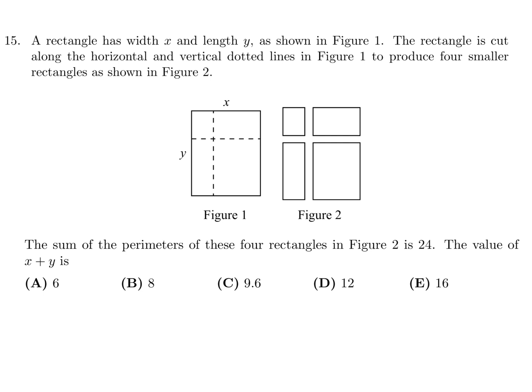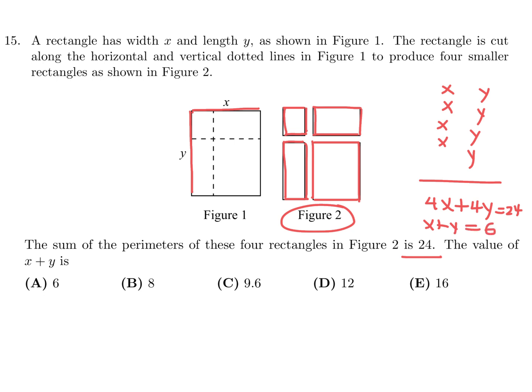A rectangle has width X and length Y as shown in figure 1. The rectangle is cut along the horizontal and vertical dotted lines in figure 1 to produce four smaller rectangles as shown in figure 2. The sum of the perimeters of these four rectangles in figure 2 is 24. The value of X plus Y is. So from there to there is X, and that's the equivalent of from there to there. So that contributes 1X. And that's also the same as that. So that's also an X. From top to bottom is Y. So that is from there to there. That's a Y. So in figure 2, the total is really 4X plus 4Y. And they're saying that is equal to 24. So if you divide through by 4, you get X plus Y equal to 6. And therefore, number 15, the answer is A.